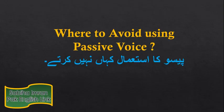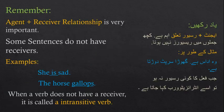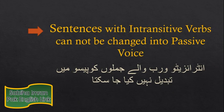यहाँ दूसरे जुम्ले का subject 'it' Julius Caesar के लिए इस्तेमाल हुआ है — अब दोनों जुम्ले balanced और harmonized हैं। अब सवाल यह है कि passive voice को कहाँ इस्तेमाल नहीं किया जा सकता। याद रखें कि agent और receiver के दर्मियान relationship बहुत एहम है। अगर यह तालुख जुम्ले में मौजूद नहीं है, तो passive voice में change नहीं कर सकते। कुछ verbs होते हैं जिनका effect किसी receiver तक नहीं पहुँचता — ऐसे verbs को intransitive verbs कहते हैं। For example, 'She is sad' या 'The horse gallops' — यहाँ 'is' और 'gallop' का effect किसी receiver तक नहीं जाता बल्के agent तक ही महदूद है। Sentences with intransitive verbs cannot be changed into passive voice۔